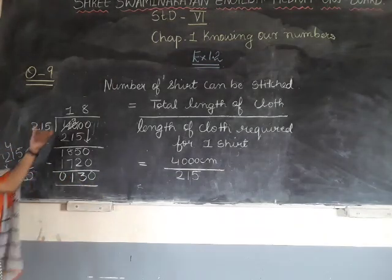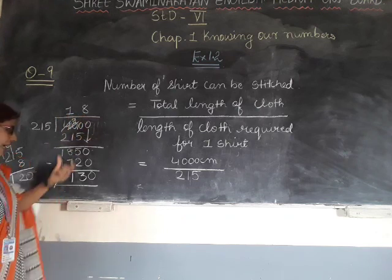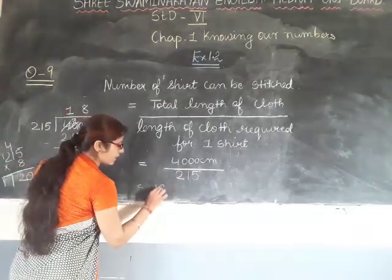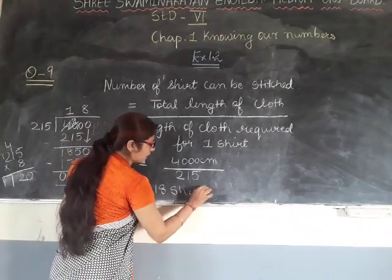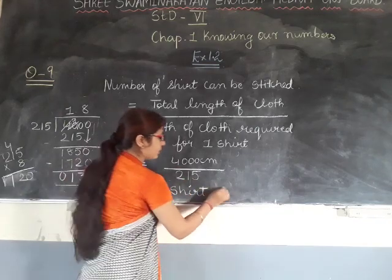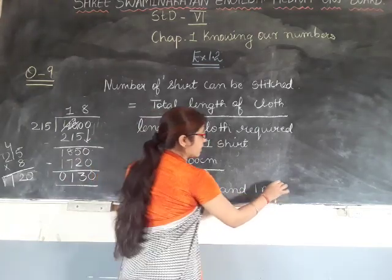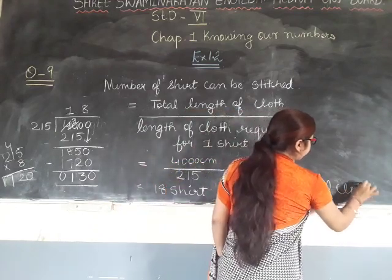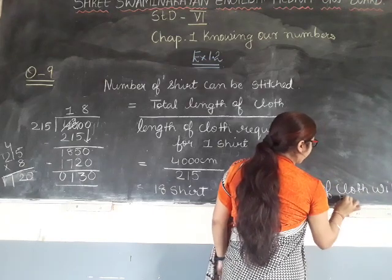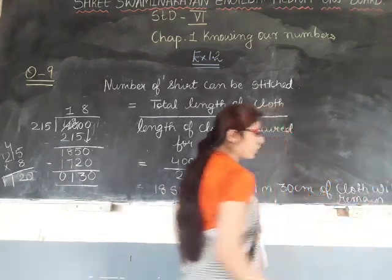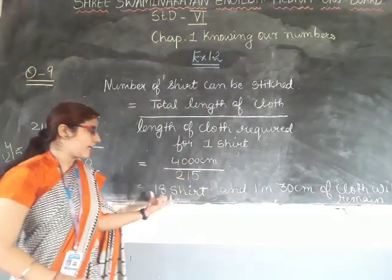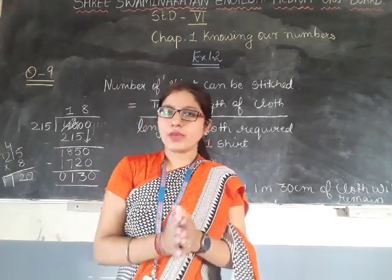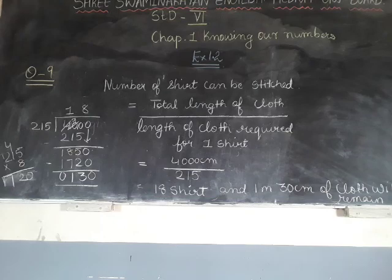That means 18 shirts can be stitched and 1 meter 30 centimeters of cloth will remain. So from this cloth, 18 shirts can be made and 1 meter 30 centimeters of cloth will be left over. Thank you so much.